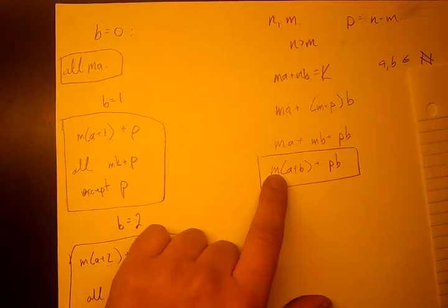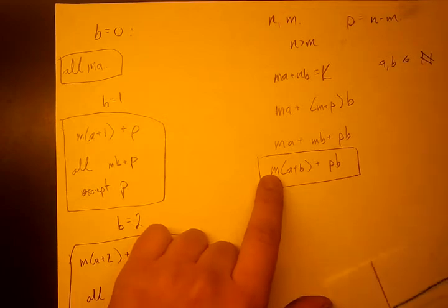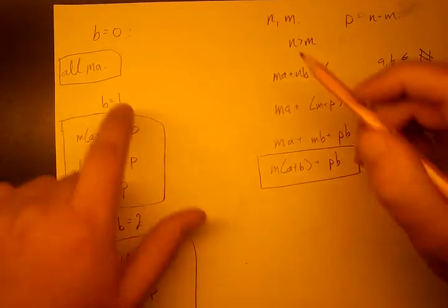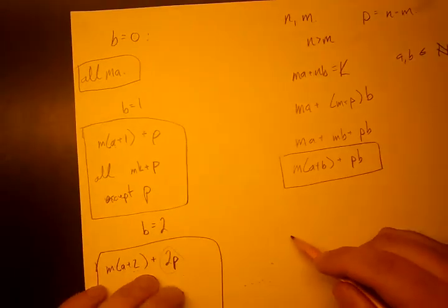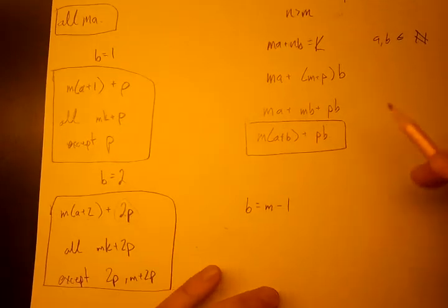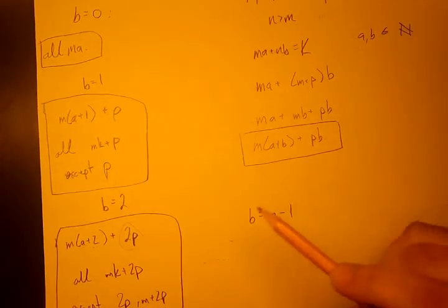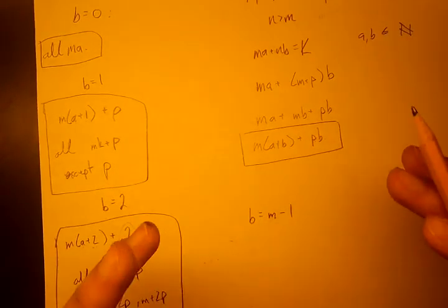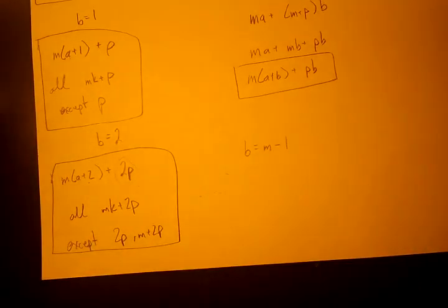And like it was five last time, it's m. So starting with zero, one, two, dot dot dot, our last case is when we let b equal m minus one. Remember the last example, m was five, so b was four. So now just generally, m minus one.